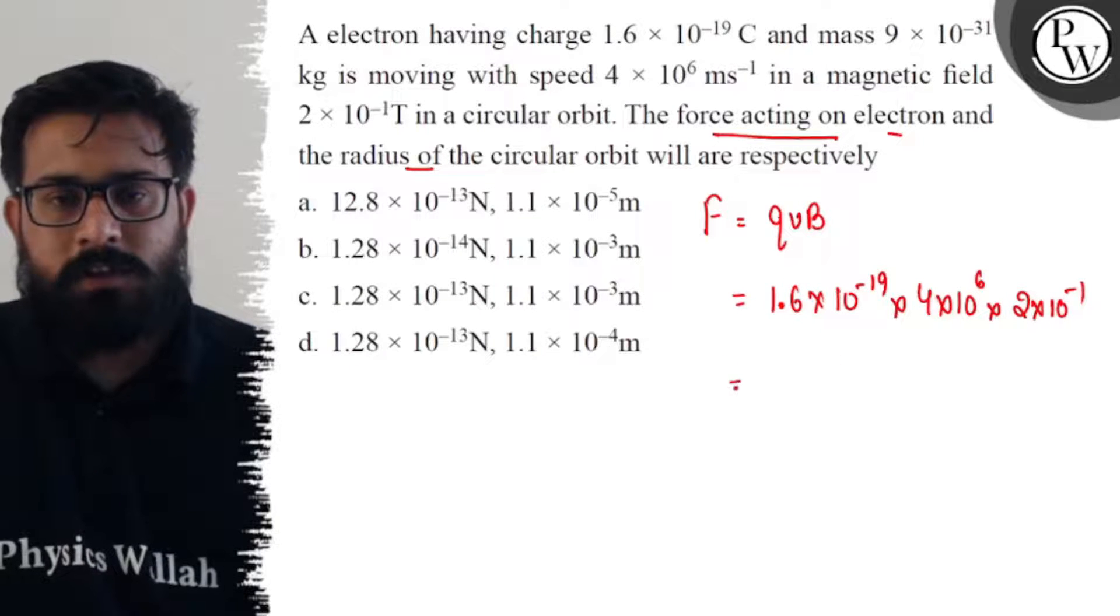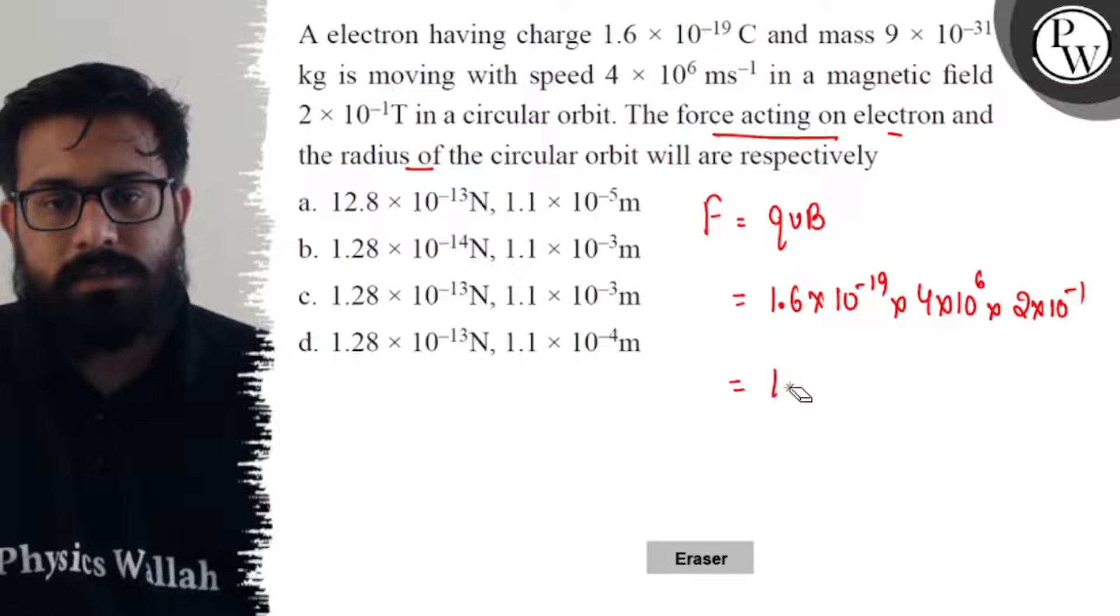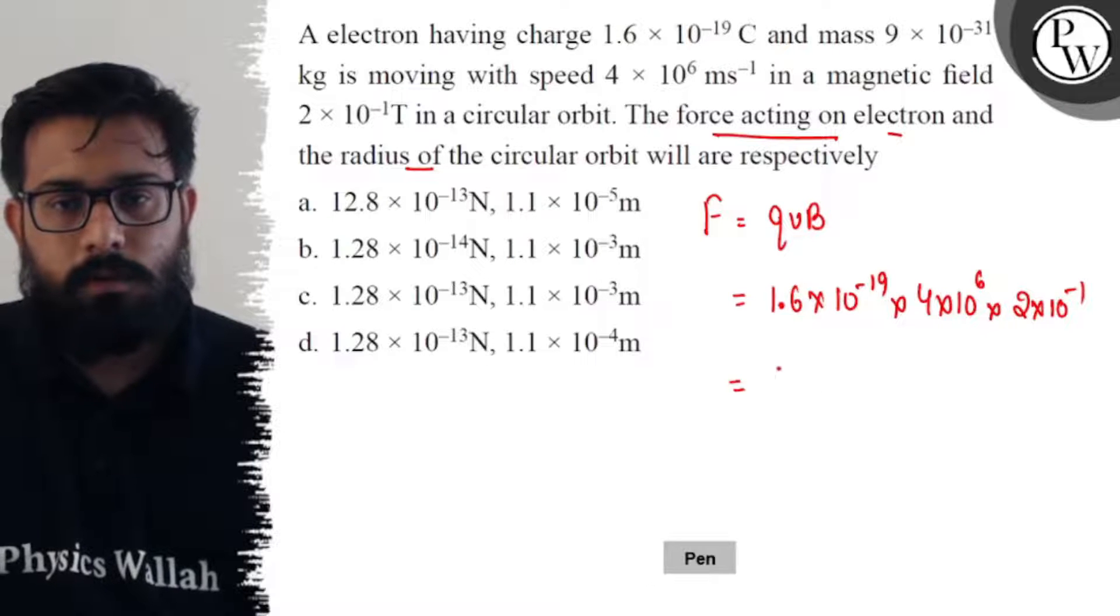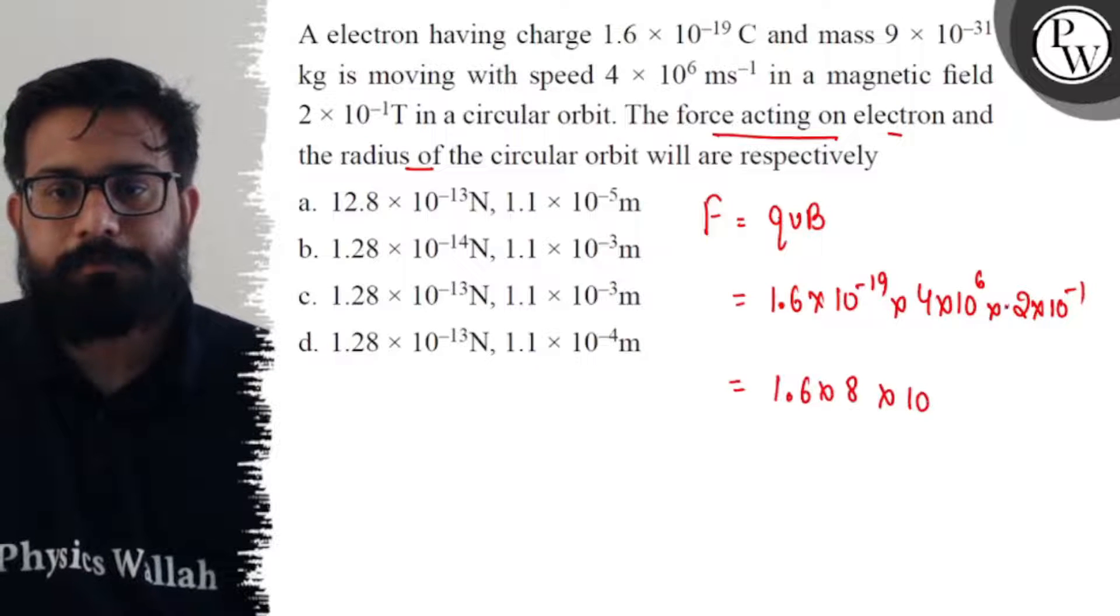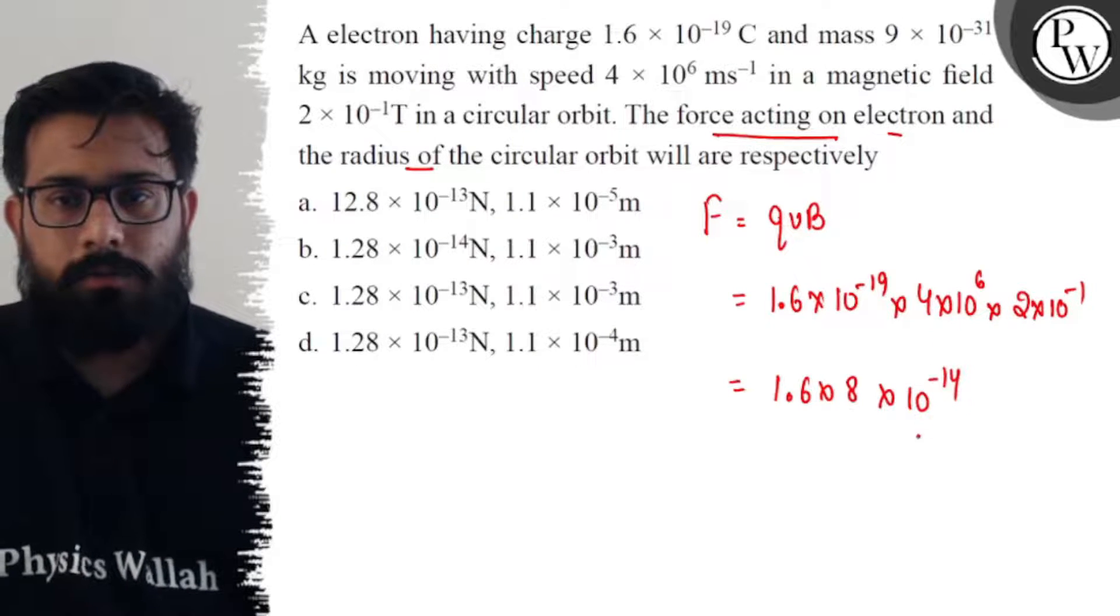So this is all, this part you will get the value of 1.6 × 4 = 8 into 10 to the power minus 14.